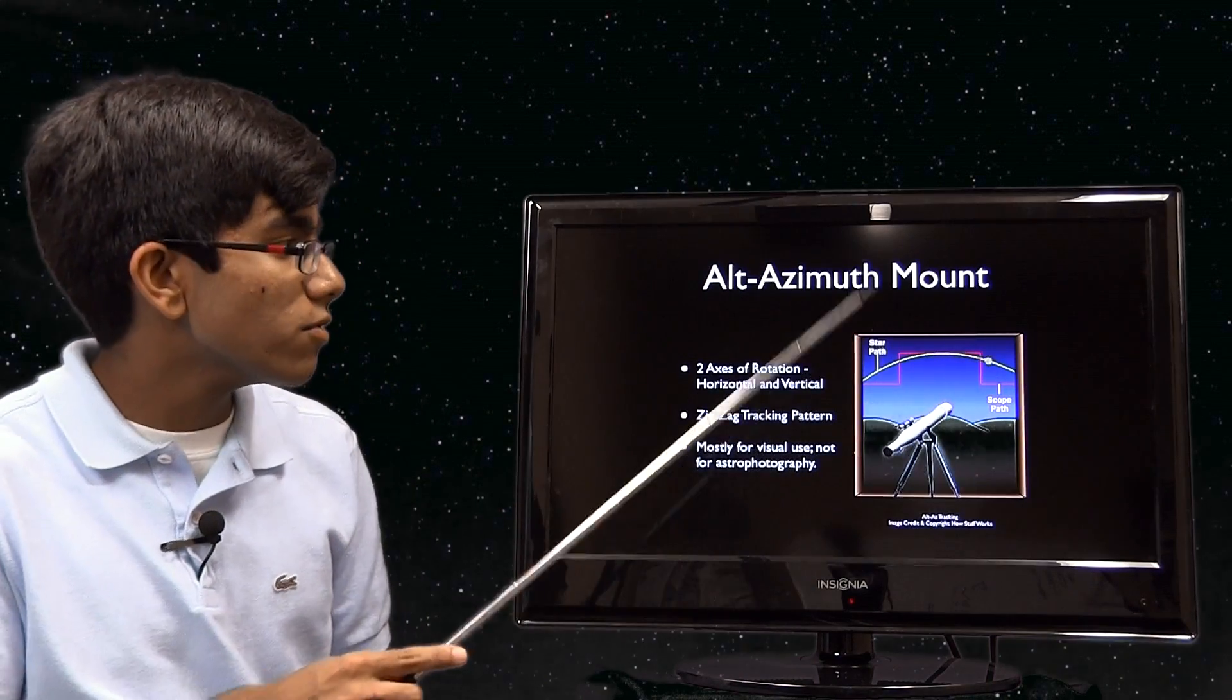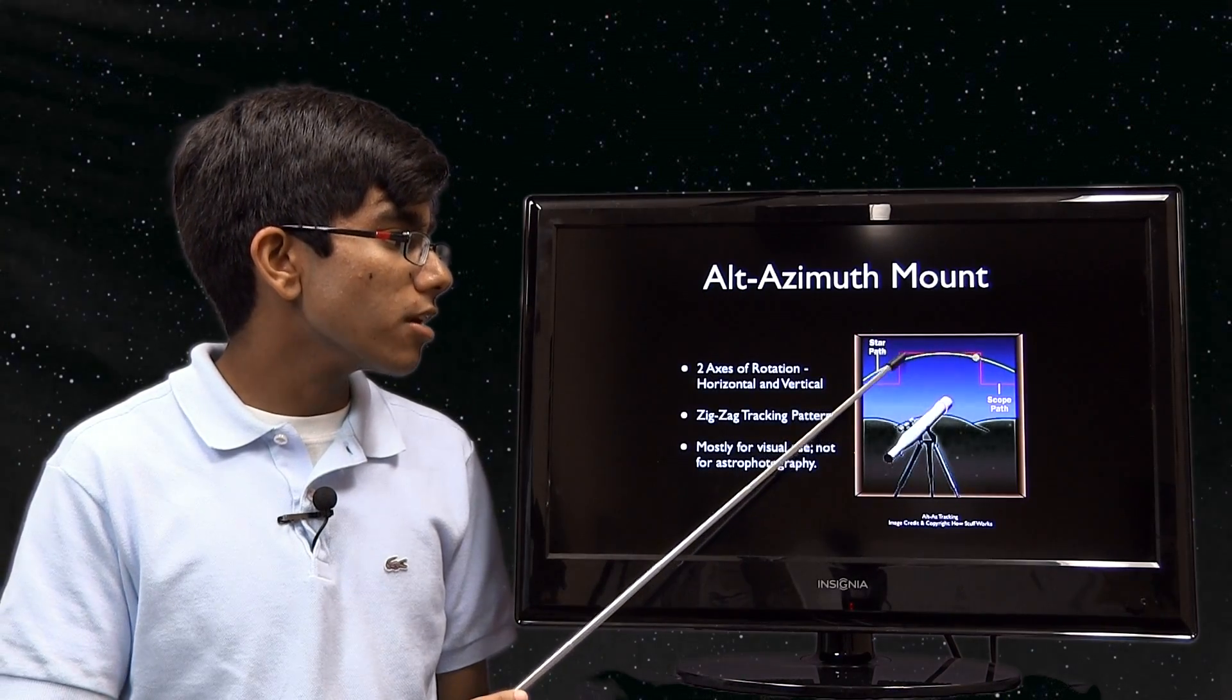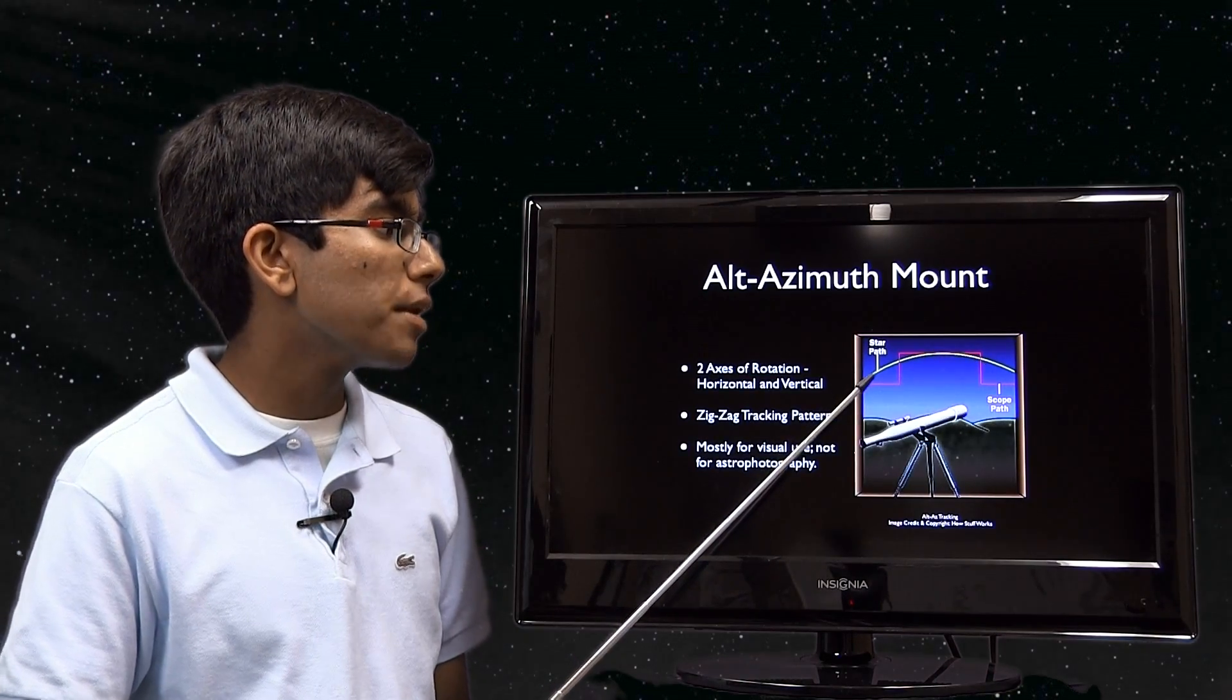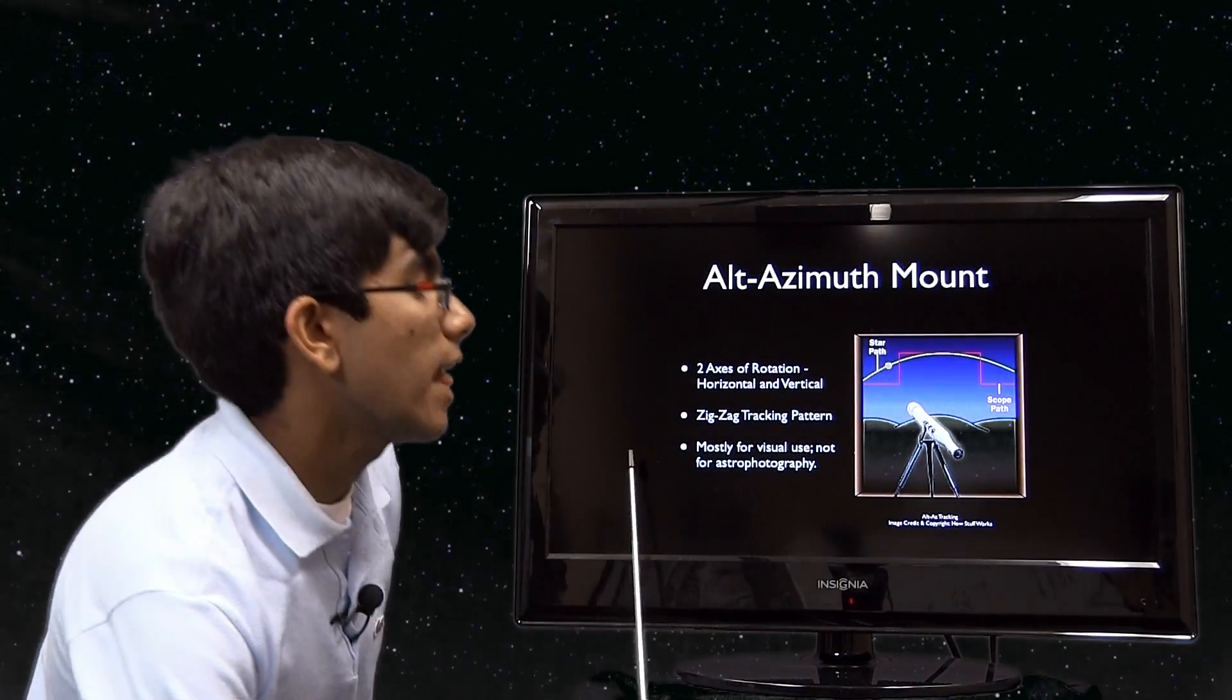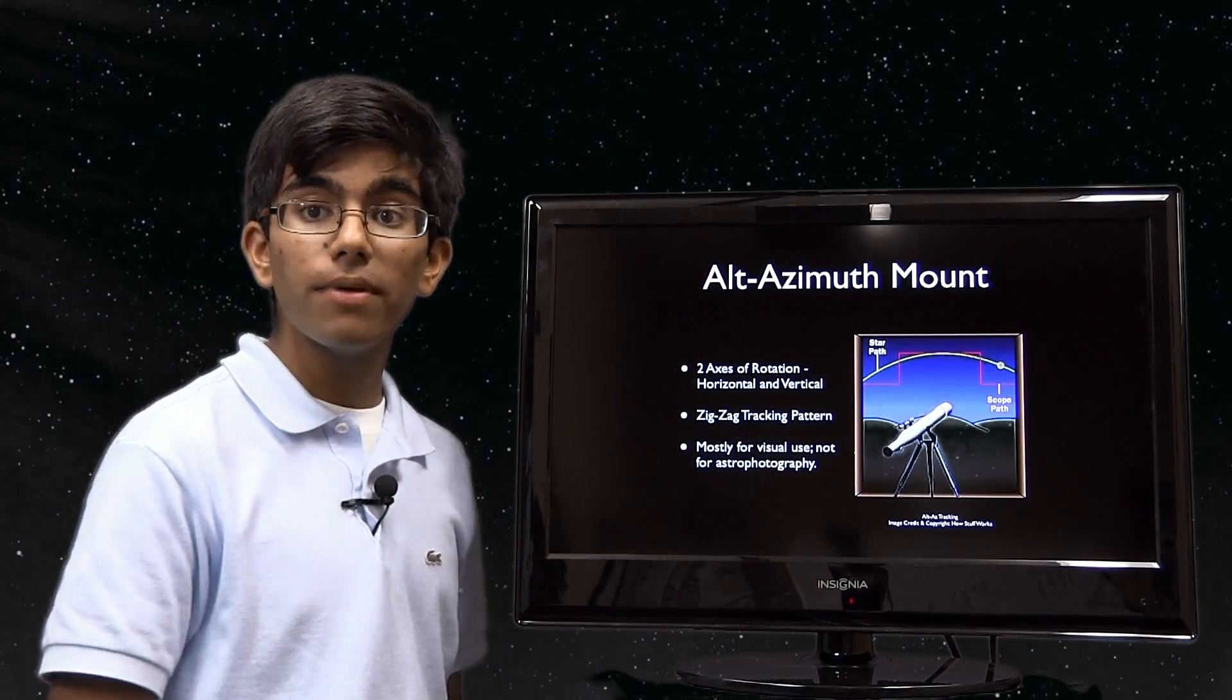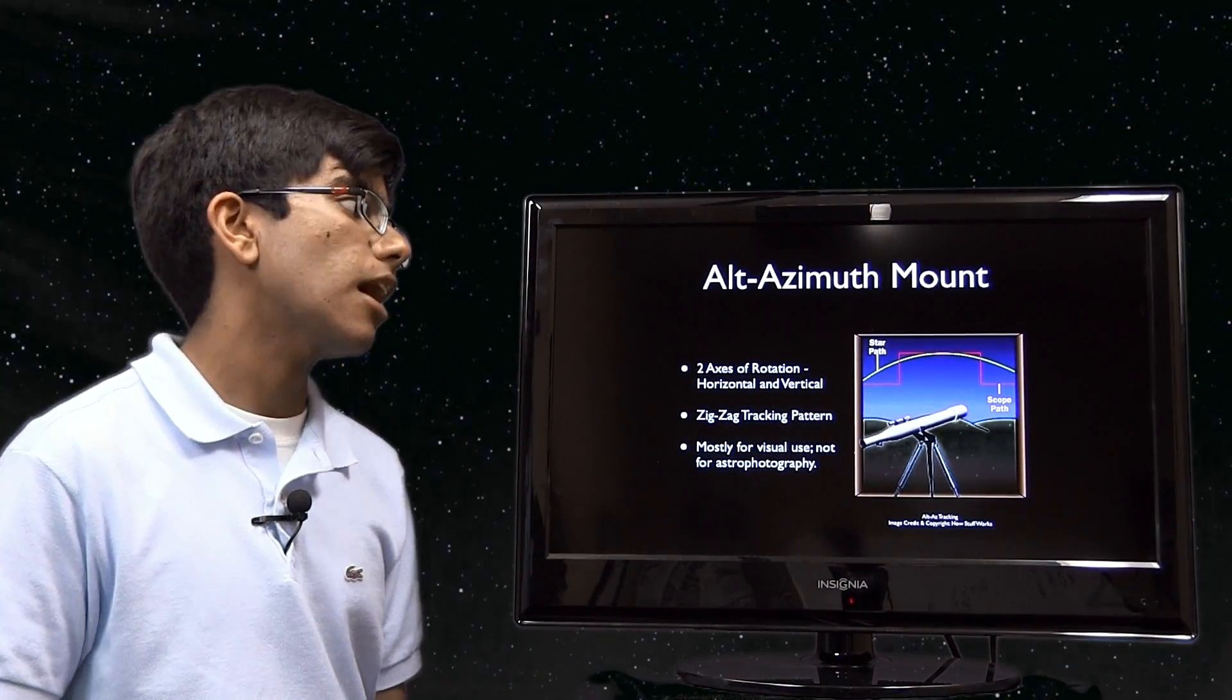Let's look at this motion here. You can see our star is traveling here. But the alt azimuth goes here, here, here, here. It's not really tracking the object. It's not moving in a continuous motion with the object. If our star is going like this, the alt azimuth is going like this—it's moving in straight lines, whereas our star is moving in an arc across the sky.